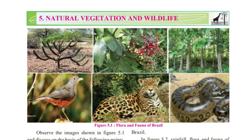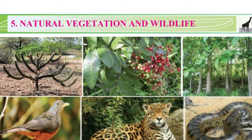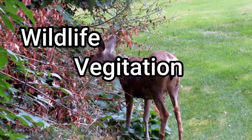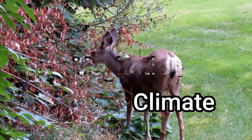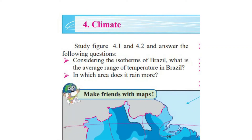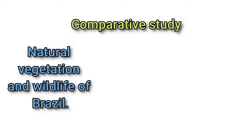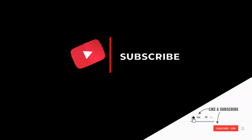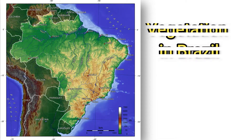Welcome to the channel of Dushi Classes. In this video we are going to study lesson number 5 of 10th standard geography. The name of the lesson is Natural Vegetation and Wildlife. Wildlife depends upon natural vegetation, and vegetation depends upon the climate, which is our previous lesson. Therefore, to understand this lesson properly, it is necessary to understand the climate lesson first.